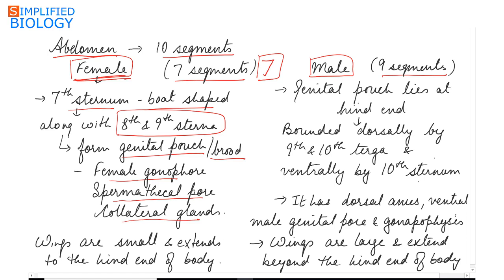While in case of the males, the genital pouch lies at the hind end of the body. It is bounded dorsally, on the dorsal side, by the ninth and tenth terga, and on the ventral side lies the tenth sternum. The genital pouch has dorsal anus, ventral male genital pore, and gonapophysis.